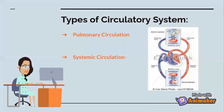Keep that in mind. Now let's learn about the different types of circulatory system: pulmonary circulation and systematic circulation.